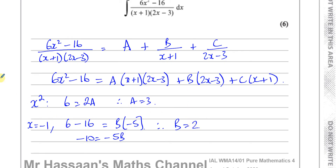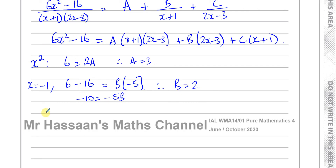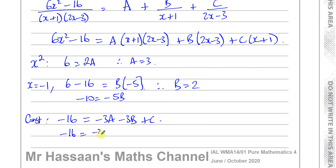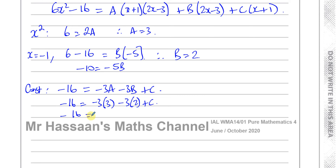So A is 3 and B is 2. Now we need to find C by comparing the constant terms on both sides. On the left side we have −16. On the right side we have A times (−3) = −3A, plus B times (−3) = −3B, plus C. Substituting A = 3 and B = 2: −16 = −9 − 6 + C, so −16 = −15 + C, giving C = −1.